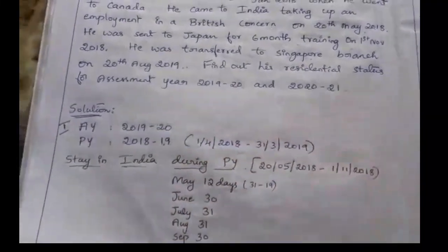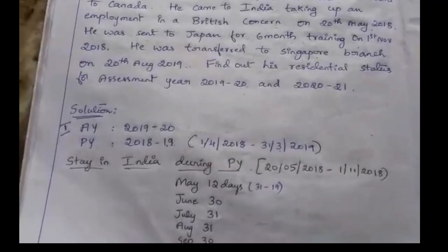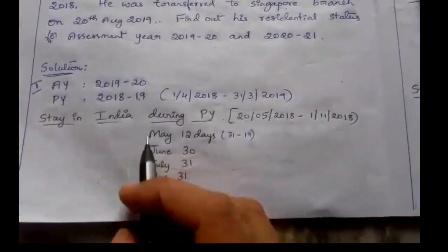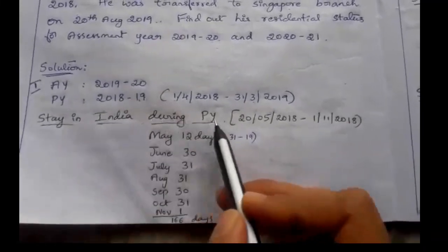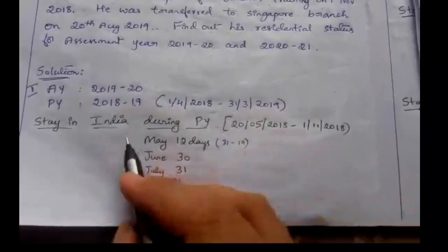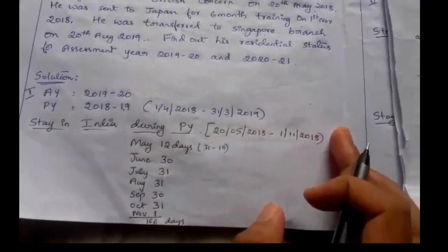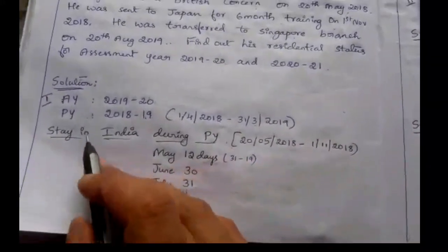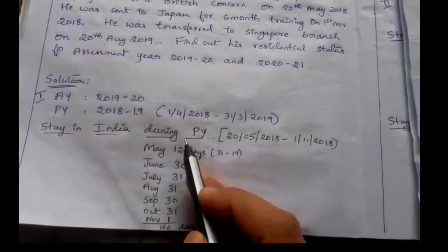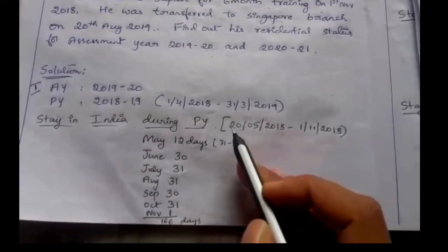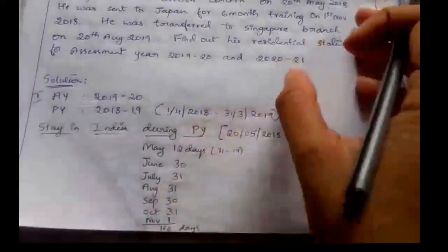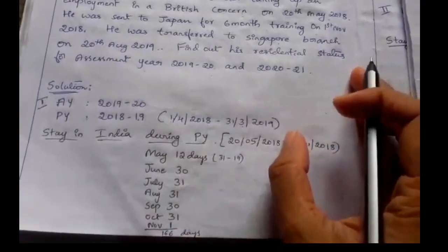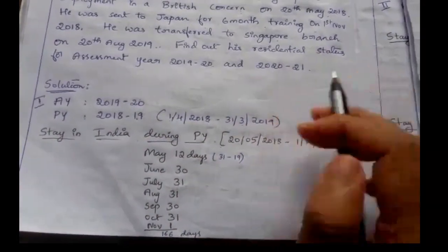First case: we have to find the residential status for assessment year 2019-20. So we will calculate for assessment year 2019-20. For this assessment year, the previous year is 2018-19. This previous year starts from 1st April 2018 to 31st March 2019. In order to find the residential status, to become a resident, he has to satisfy any one of the basic conditions. The first condition is he must stay in India for 182 days during the previous year.